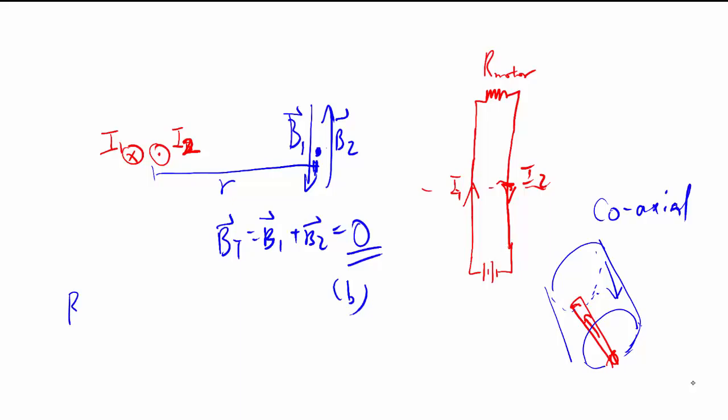Bit of a tangent, but coming back is a demonstration of using this formula for the magnetic field caused by a straight wire current.